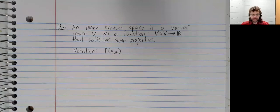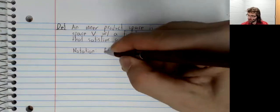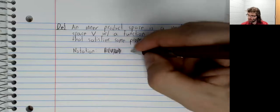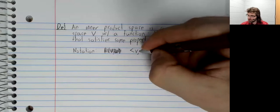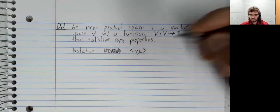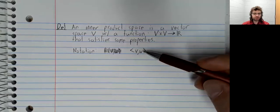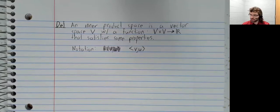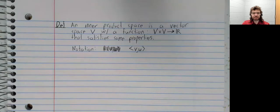However, this function that we're looking at has special notation. Instead of using our F notation, we put our inputs inside these kind of pointy brackets. And the properties that have to be satisfied are as follows.